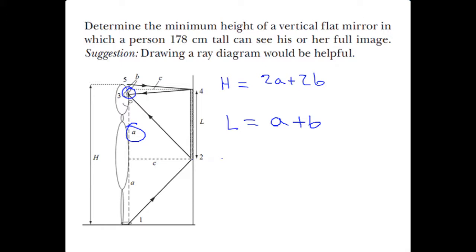So l is h over 2, or 178 centimeters over 2, which is 89 centimeters. The mirror must be half the height of the person.